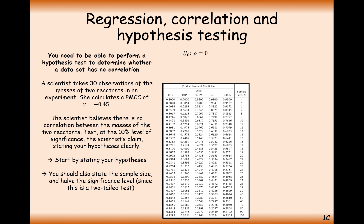Let's start with our hypotheses. We need H0, which uses the Greek letter rho — it looks like a P but at an angle. Rho is used for the PMCC of the whole data set, while R is used for a sample. Since we have all 30 observations, we use rho. So H0: rho equals 0, meaning no correlation. The alternative hypothesis is that there is some correlation, whether positive or negative.